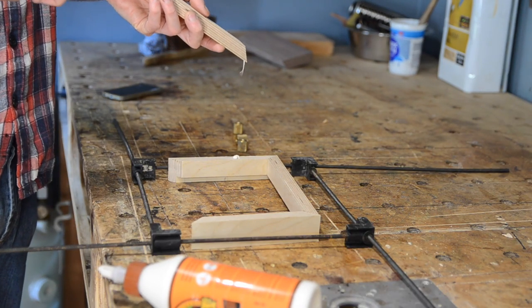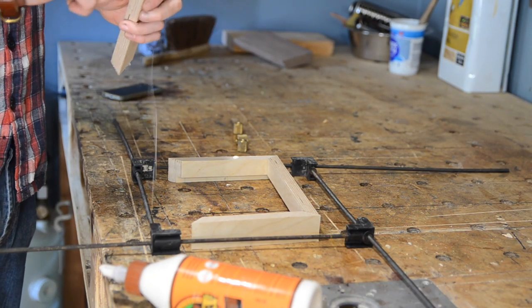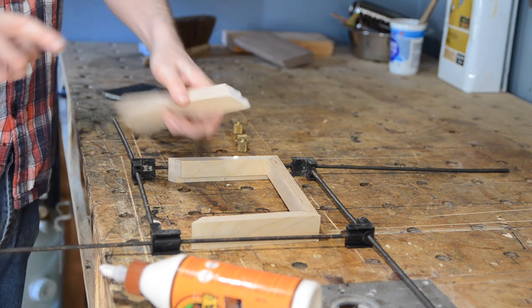I then get the stop set up on the mitre saw and start cutting the 45s to make the frame. I get some glue on the mitres, out of frame again well done Matt, and then I can get it all glued up and clamped together.